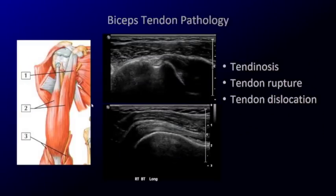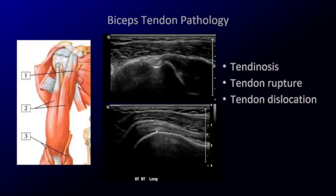Moving on to the biceps: as the name implies, there are two heads. The long head comes down through the bicipital groove, and the short head comes up and attaches to the coracoid. What we're looking at with ultrasound is the long head. In transverse view we have the lesser tuberosity here, the greater tuberosity here, and the biceps sitting within the bicipital groove. Tendons are bright on ultrasound — hyperechoic. In long axis you can see the fibers; you tend to lose that echogenicity as the tendon dives and is no longer perpendicular to the sound.